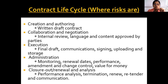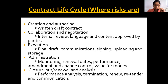When we talk about the contract life cycle, the risk cycle begins with a written draft of the contract. When we have a written draft, we can clearly and properly manage it. There should be collaboration and negotiation, through which we determine the language and contents approved by the parties. Then the contract should be properly executed. There is also an element called administration — properly monitoring the contract with renewal dates and performance. Then closure, renewal, and analysis: performance analysis, termination, understanding how the contract performed, whether to renew, retender, or close it.